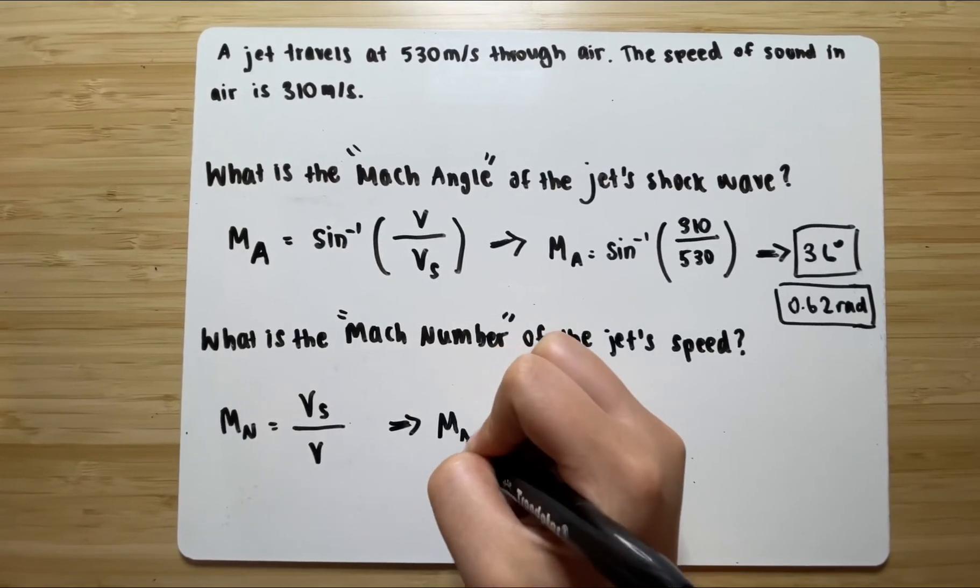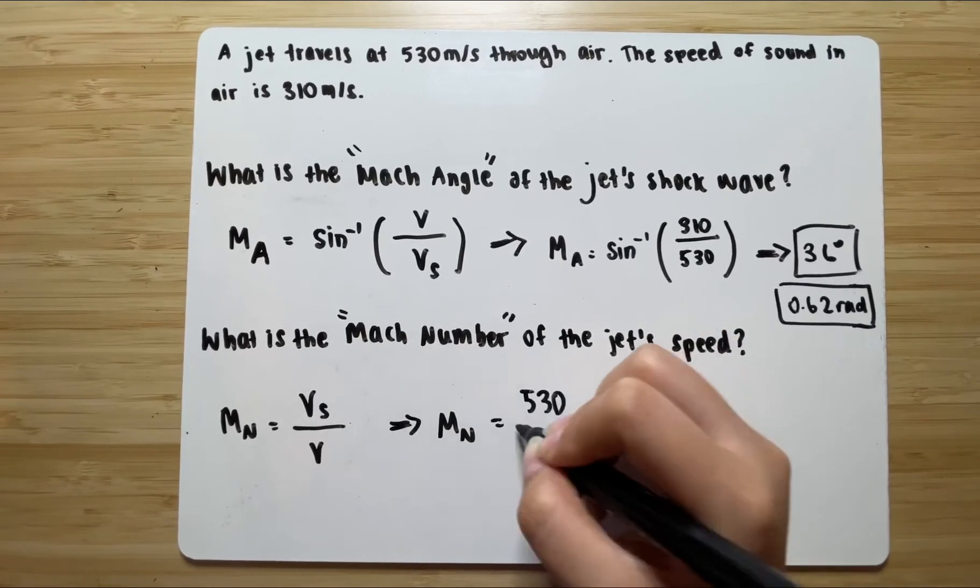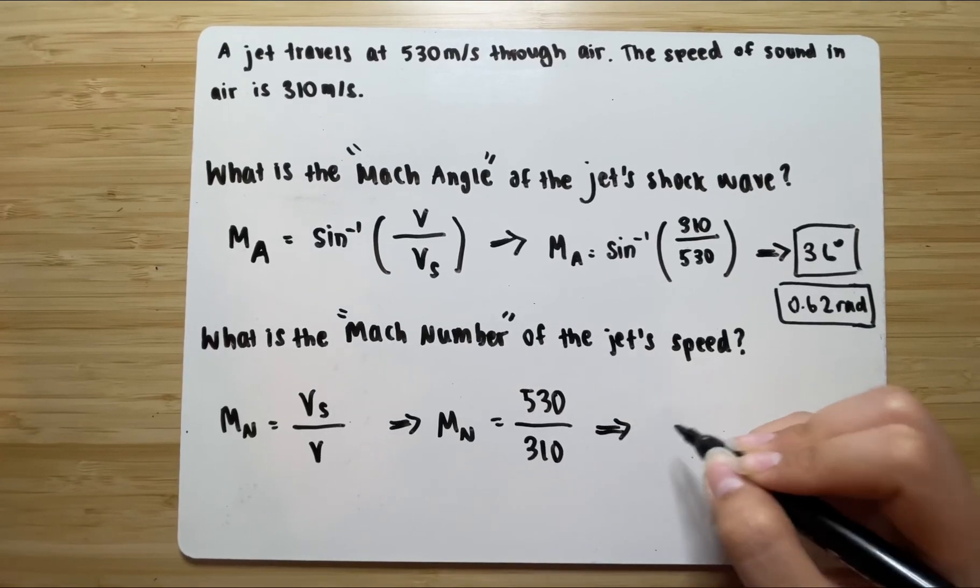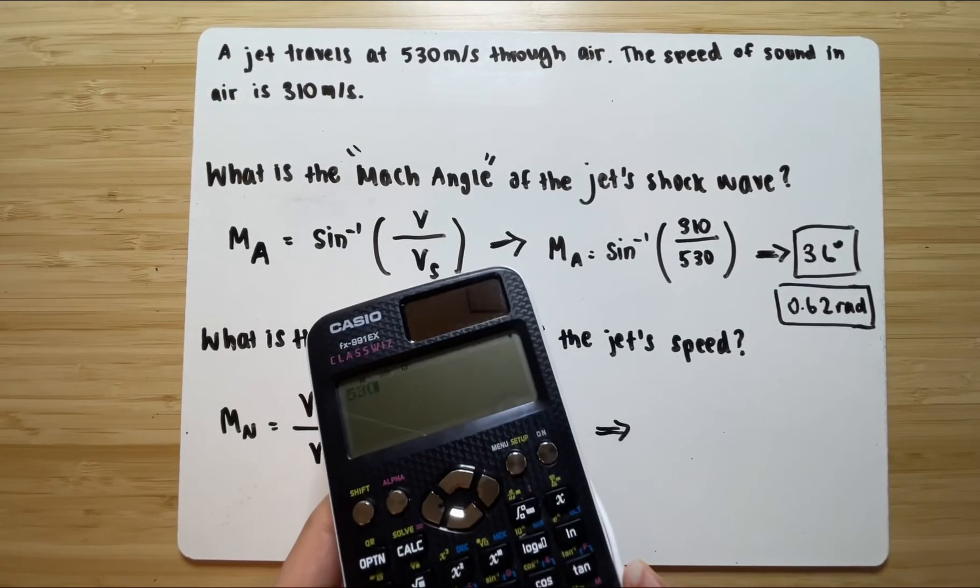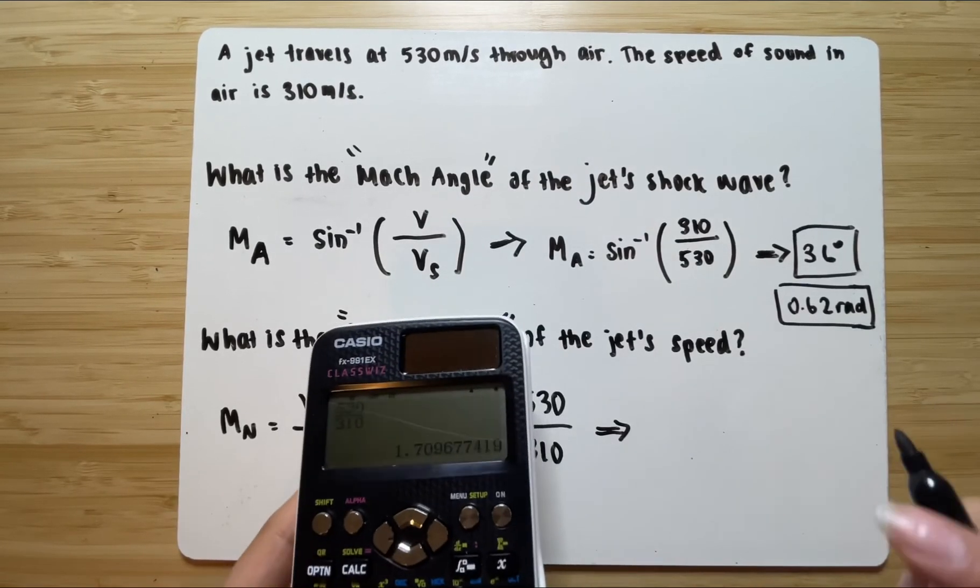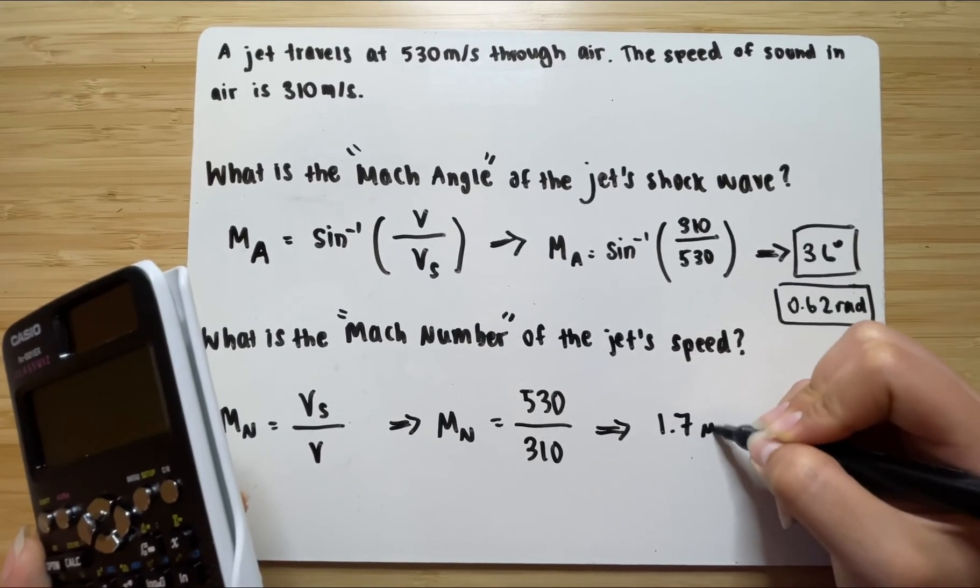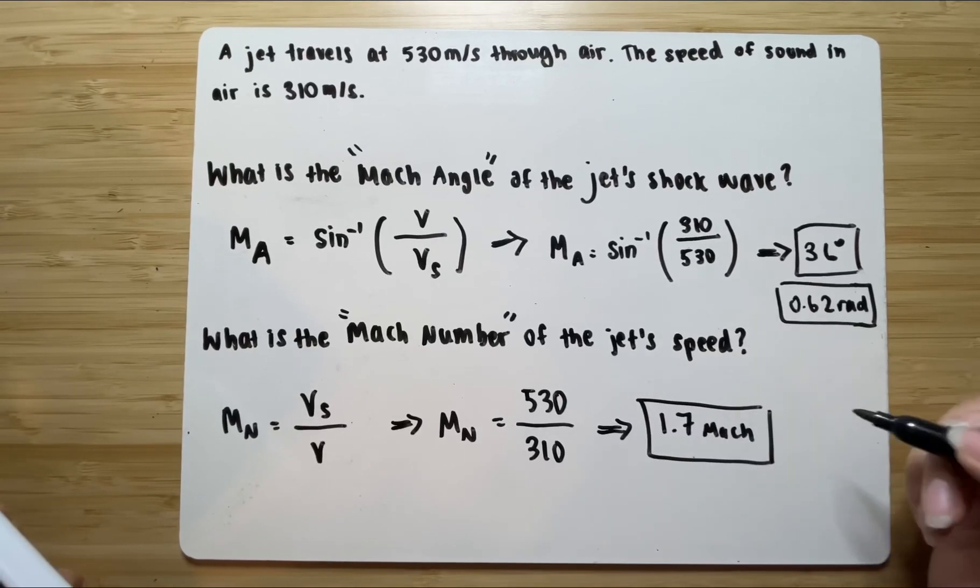So you should have the speed of the jet is 530. The velocity of sound is 310. Therefore, you have 530 over 310. So it's 1.7, 1.7 Mach. So this would be the Mach number of the jet's speed.